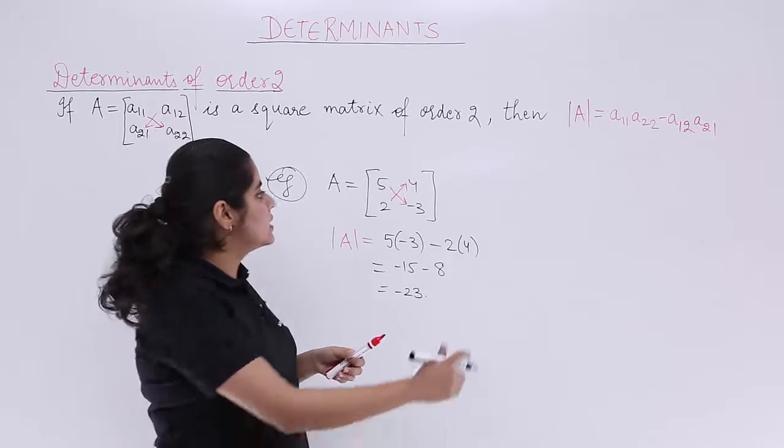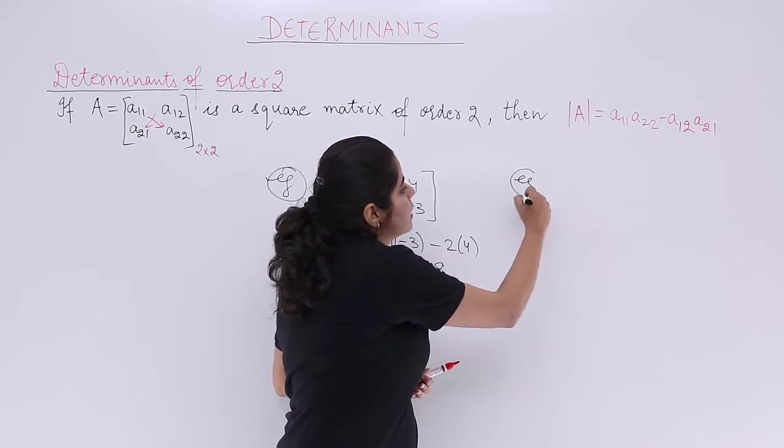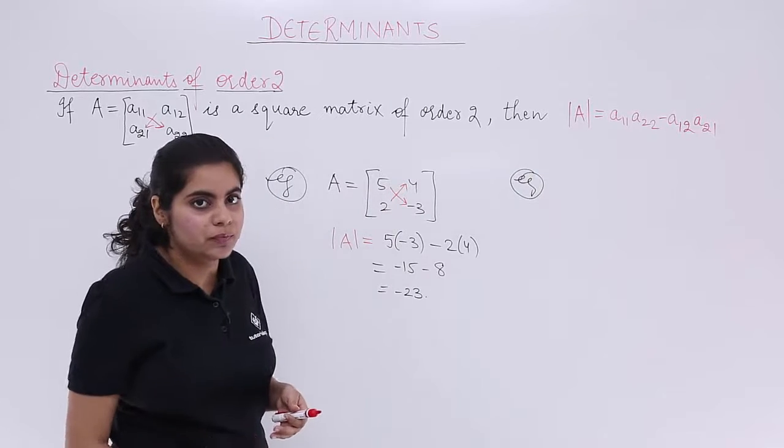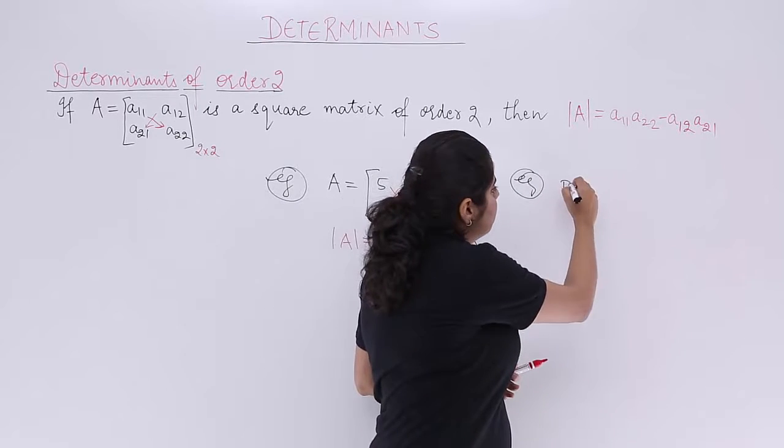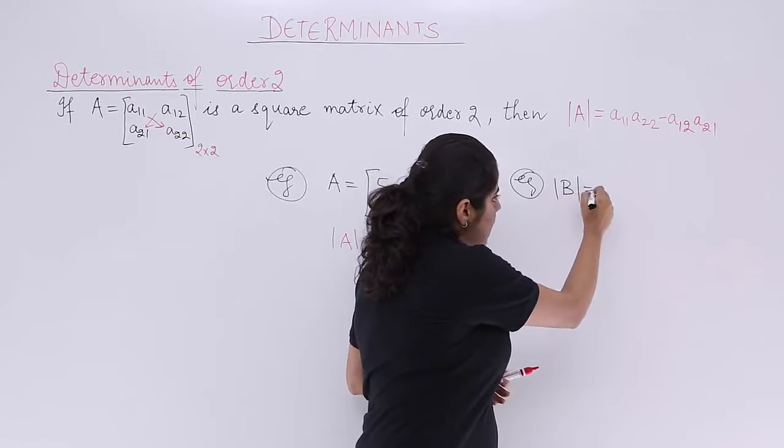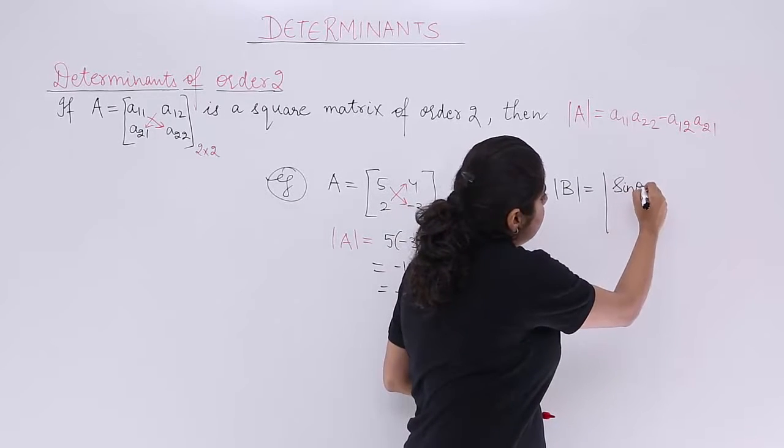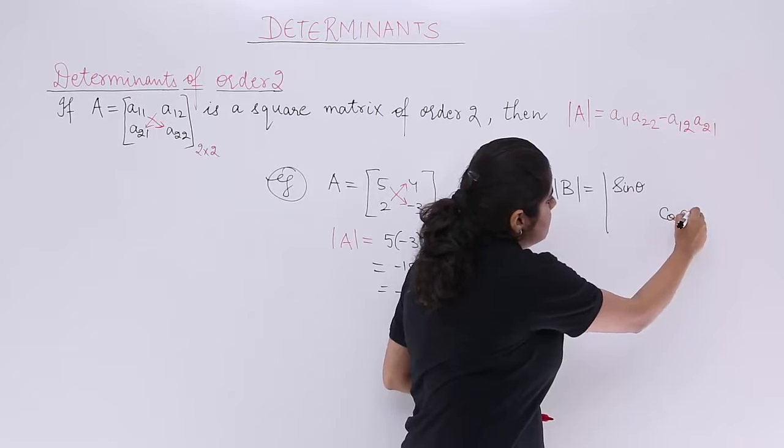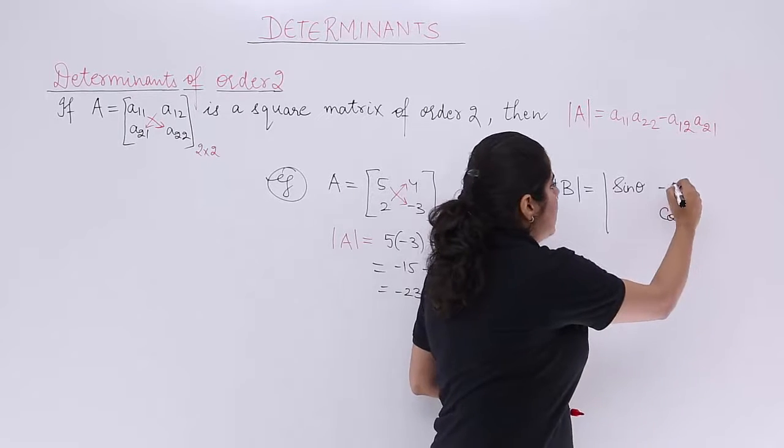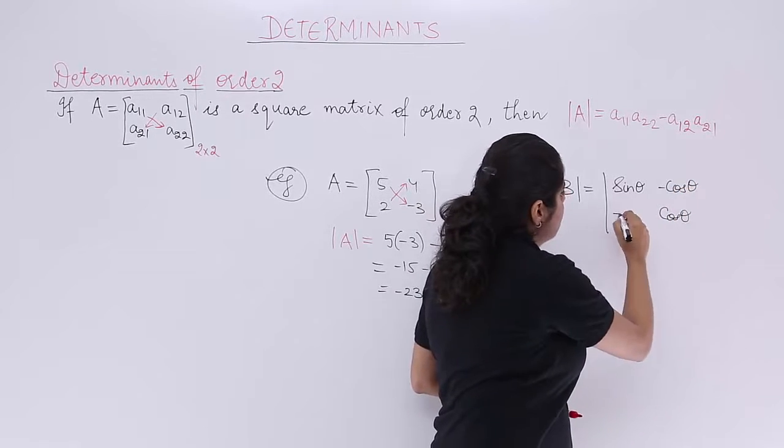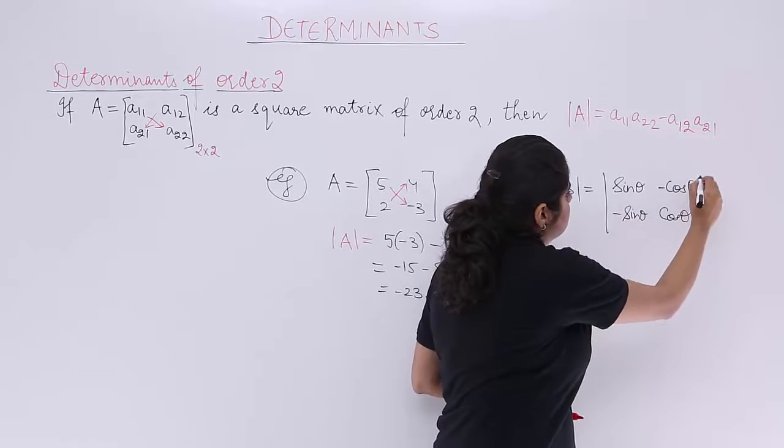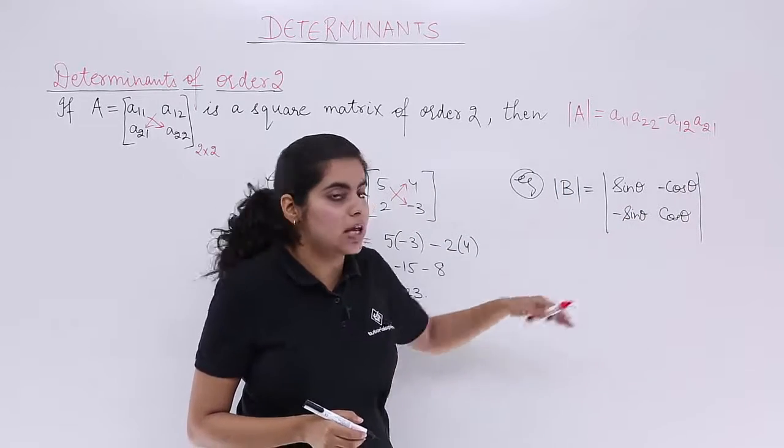Let's see one more example wherein we don't have numbers, rather a different expression. Suppose I have B and I want to compute det B for [[sin theta, cos theta], [-cos theta, -sin theta]]. Anything can be given. This is given by chance, say.